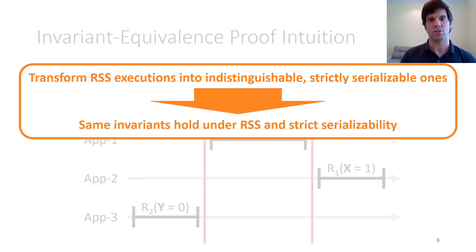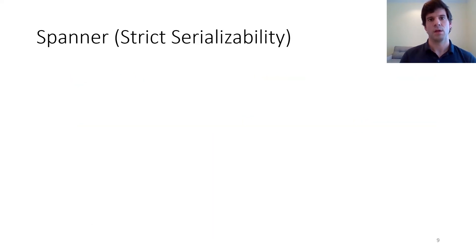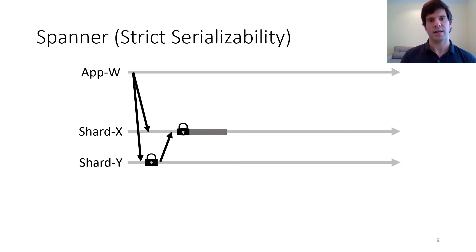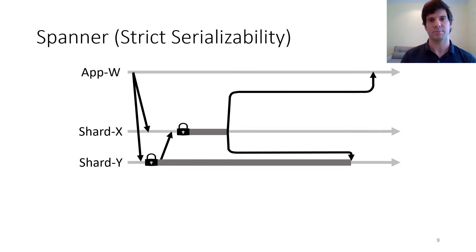We describe in our paper how to use this transformation to show that RSS is invariant equivalent to strict serializability. We'll now look at how RSS can unlock better performance for Spanner. Spanner's read-write transactions use two-phase locking and a variant of two-phase commit. For example, suppose we have two shards and an application process writing keys X and Y. To commit, the process sends a message to each shard. The participant acquires its locks and sends a message to the coordinator that it is prepared to commit. The coordinator then acquires its locks, commits the write of X, and unlocks, then notifies the application process and the participant, which then commits the write of Y and also unlocks.